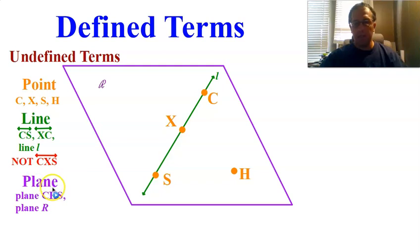And the last one was plane. Remember, it extends in just two directions. It is two-dimensional. All right, we can either call this plane R, this capital cursive R up here, or we can pick three letters, three points that are not in a line. So again, you cannot call this plane SXC because those three are on a line. You have to use this H somewhat. We could have called it plane CHX. That would have been fine, just not CXS. Okay, so those are the undefined terms.